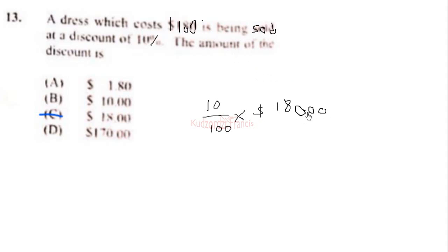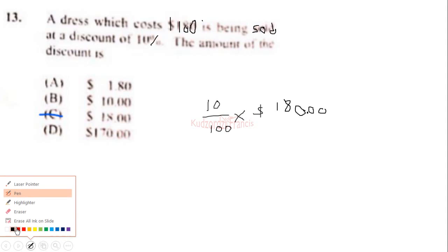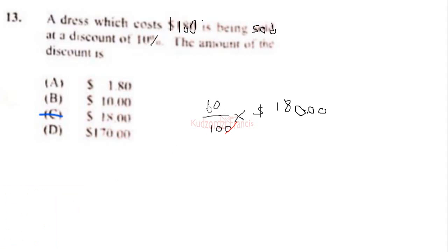Let's simplify: 100 cancels, and we are left with 10 going into 180, which is 18 times. So 1 times 18 gives us 18 dollars. The amount of discount is 18 dollars, which is option C.